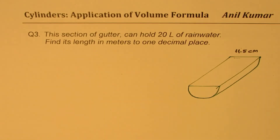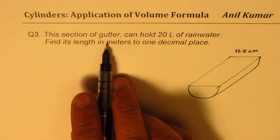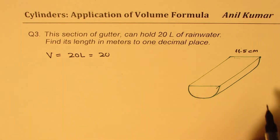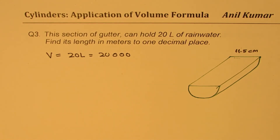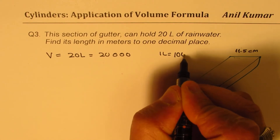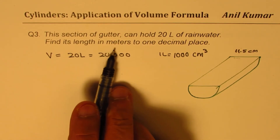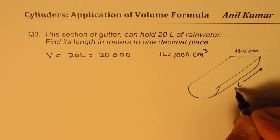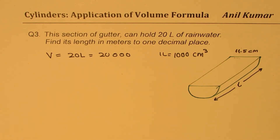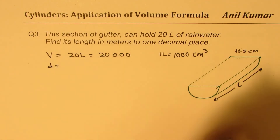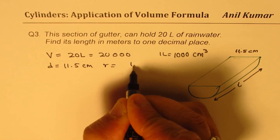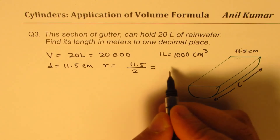Now let's take question number three. This section of gutter can hold 20 liters of rainwater, so volume is 20 liters, which is 20,000 centimeter cubed, since one liter is 1,000 centimeter cubed. Find the length in meters to one decimal place. We are given a diameter of 11.5 centimeters, so the radius will be half of this.